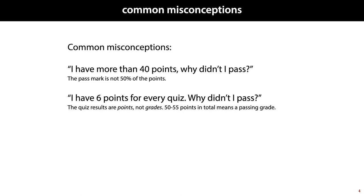The grading system, despite our best efforts, is a little complex. This occasionally leads to some misunderstandings. The first common one: the pass mark is not half the points. There is no rule that says that half the points should correspond to a passing grade. In our case we found that a pass mark somewhere between 50 and 55 points for the quizzes and the exam together means that you've learned the minimum required subject matter.